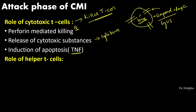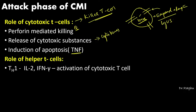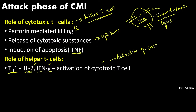Next is the role of the helper T-cell. There are two types: helper T-cell 1 secretes two important cytokines — interleukin-2 and interferon-gamma. These cause activation of the cytotoxic T-cell, meaning helper T-cell 1 is helping in the activation of cell-mediated immunity.